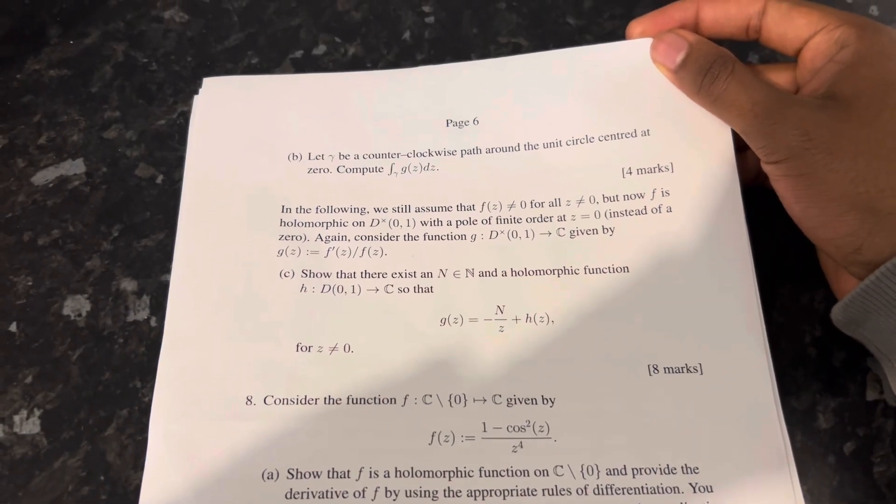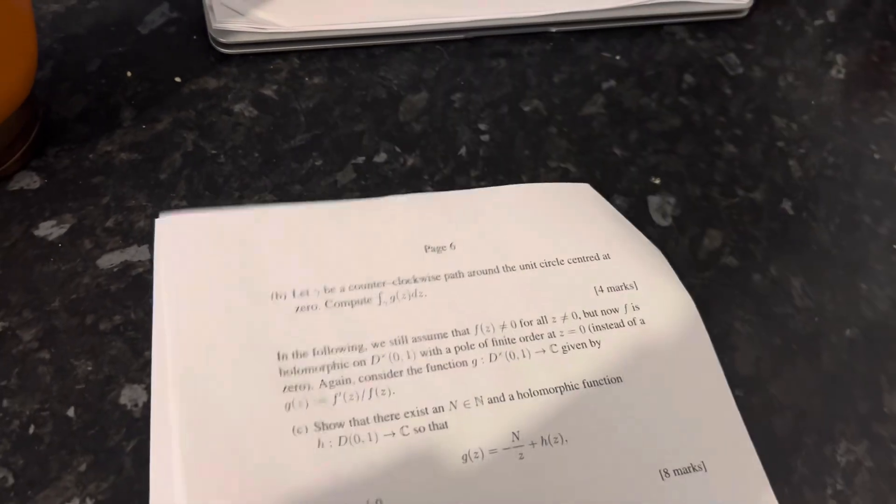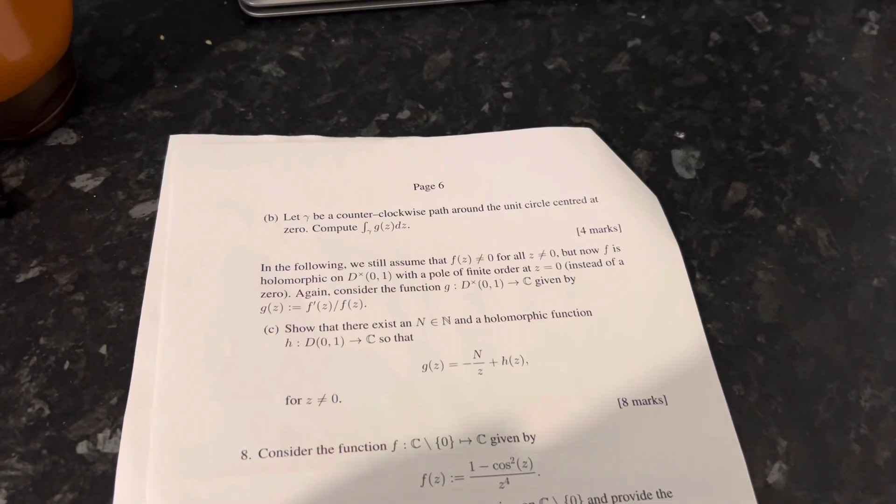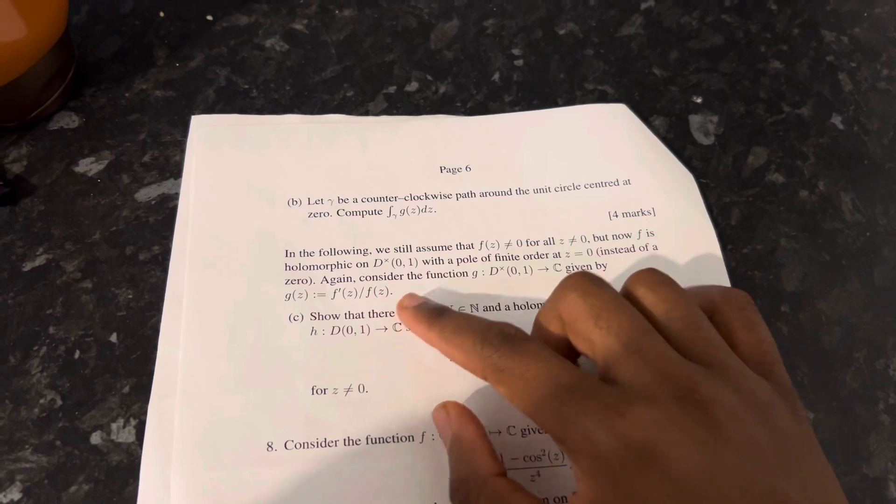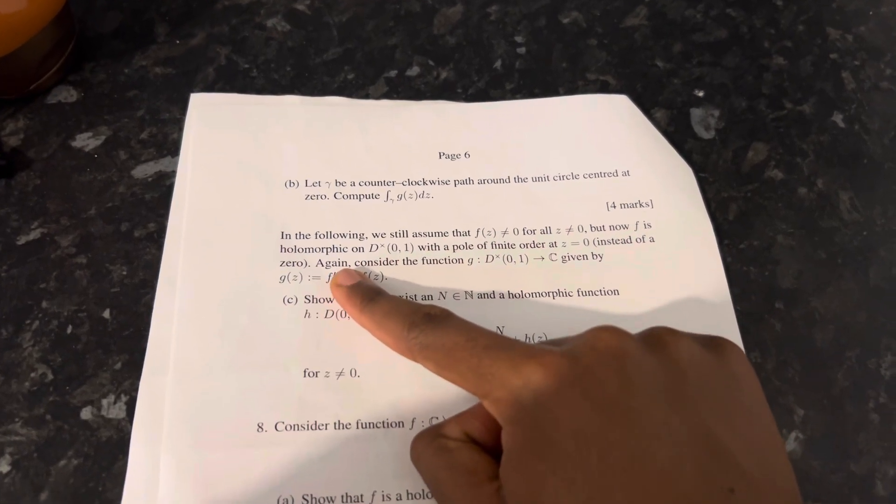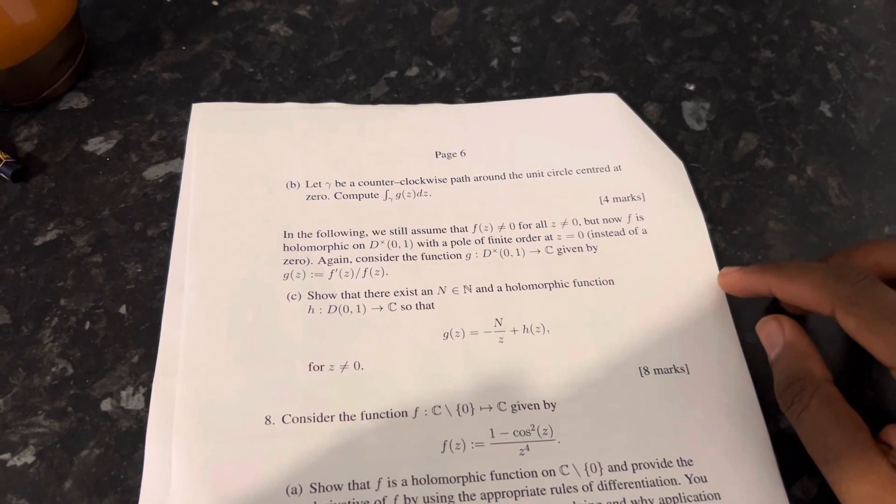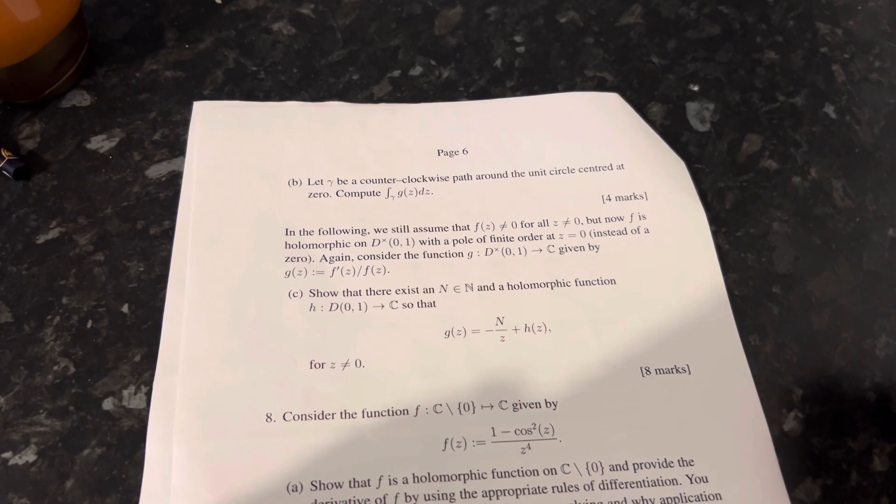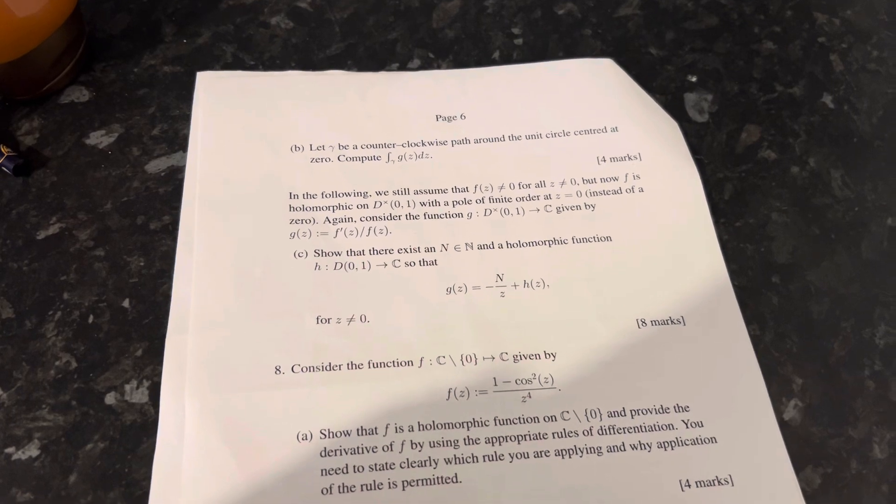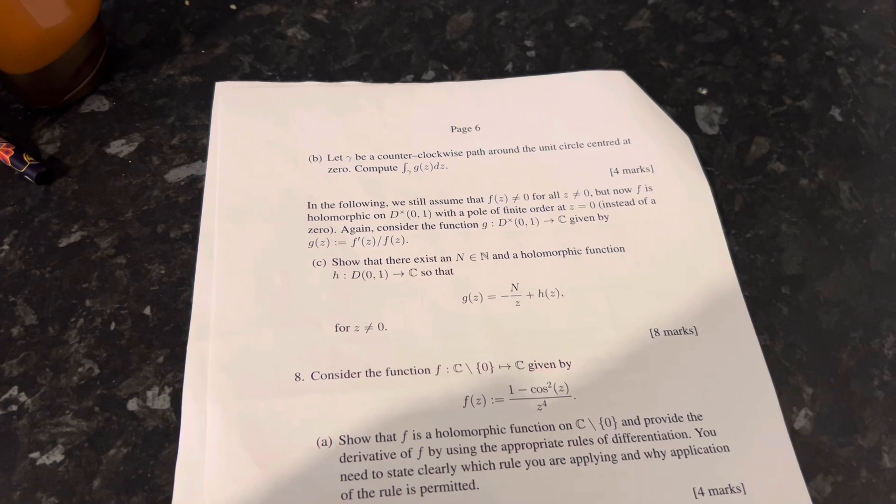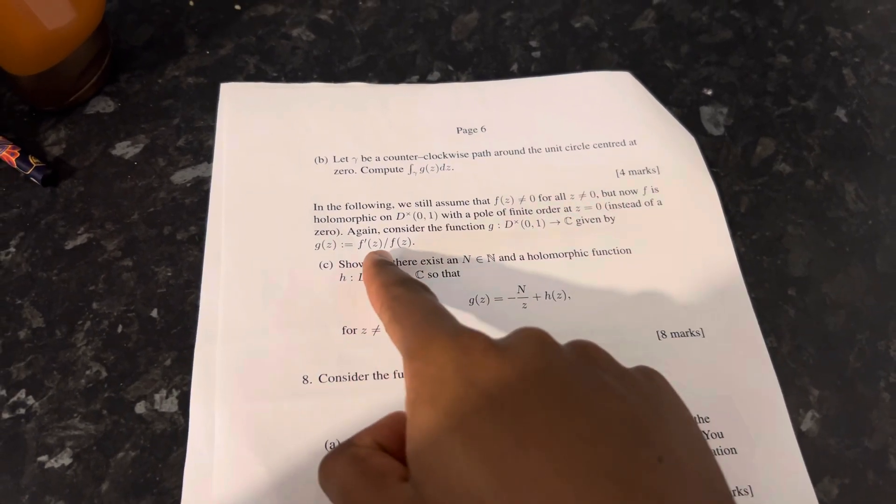Let gamma be a counterclockwise path around the unit circle centered at zero. That was just a simple path integral that I got wrong, if I'm not mistaken. Actually no, I got a different one wrong. In the following we will still assume that f is holomorphic on the punctured disc with a pole of finite order at z equals zero. Lord knows what the difference is. If someone could tell me that would be great. Again consider the function g given by that. There exists an n and a holomorphic function. I said let g of z equals z to the minus n times another function of z, then I said let f of z equal that, subbed it into there, simplified, and you got this, where h of z is some random function.